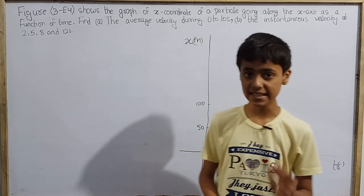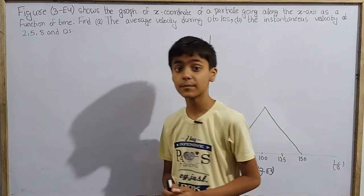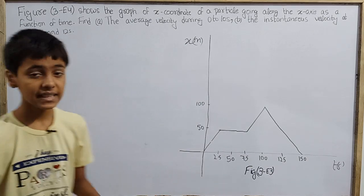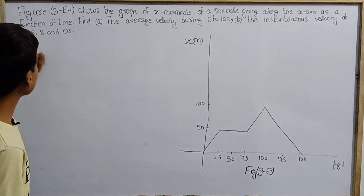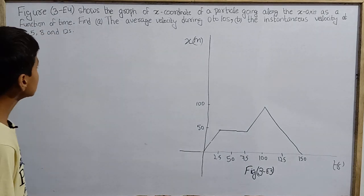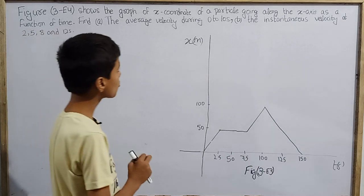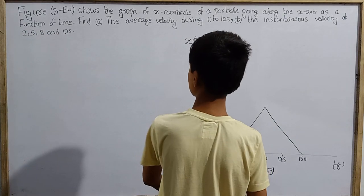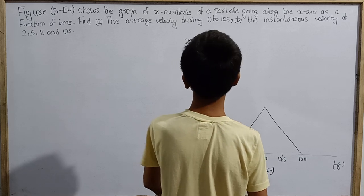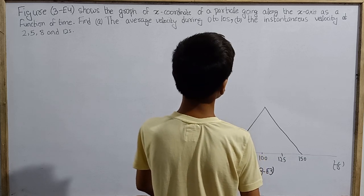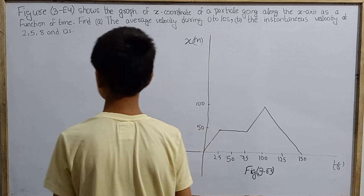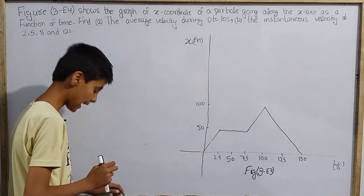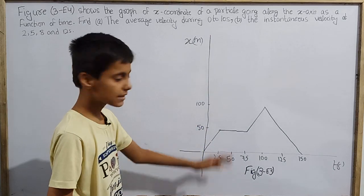Everyone, we are back with Concepts of Physics textbook written by Professor H.C. Verma. Kinematics question number 9: Figure 3E4 shows the graph of x coordinate of a particle going along the x-axis as a function of time. Find (a) the average velocity during 0 to 10 seconds, (b) the instantaneous velocity at 2, 5, 8 and 12 seconds.